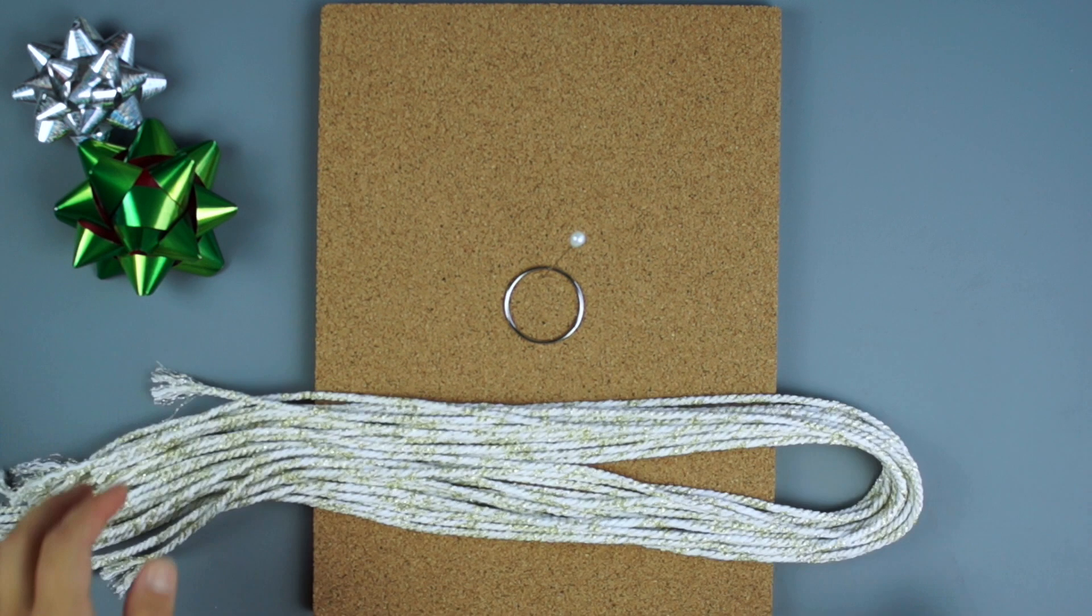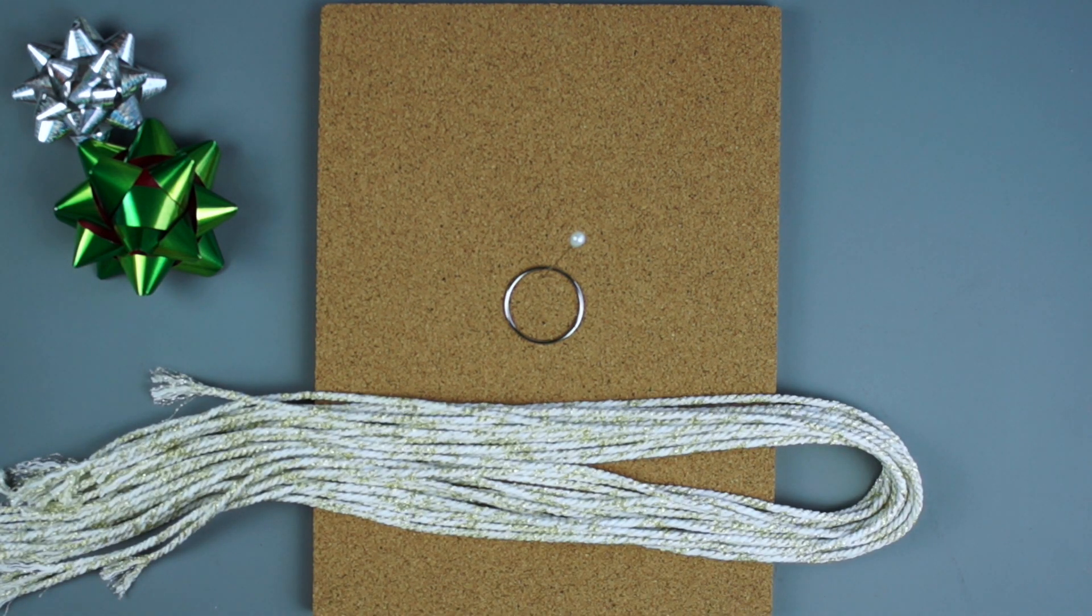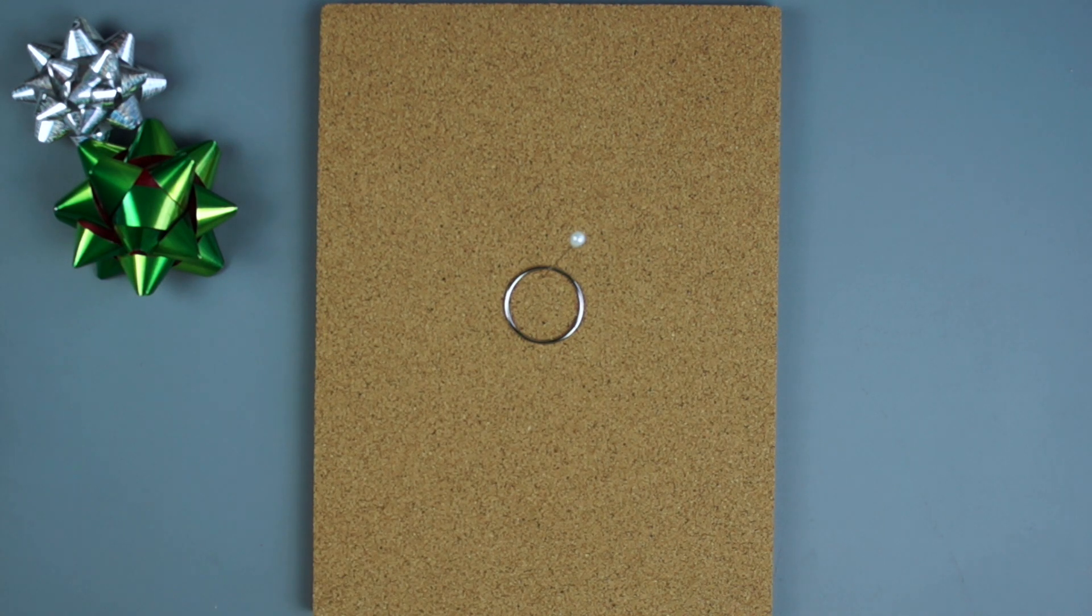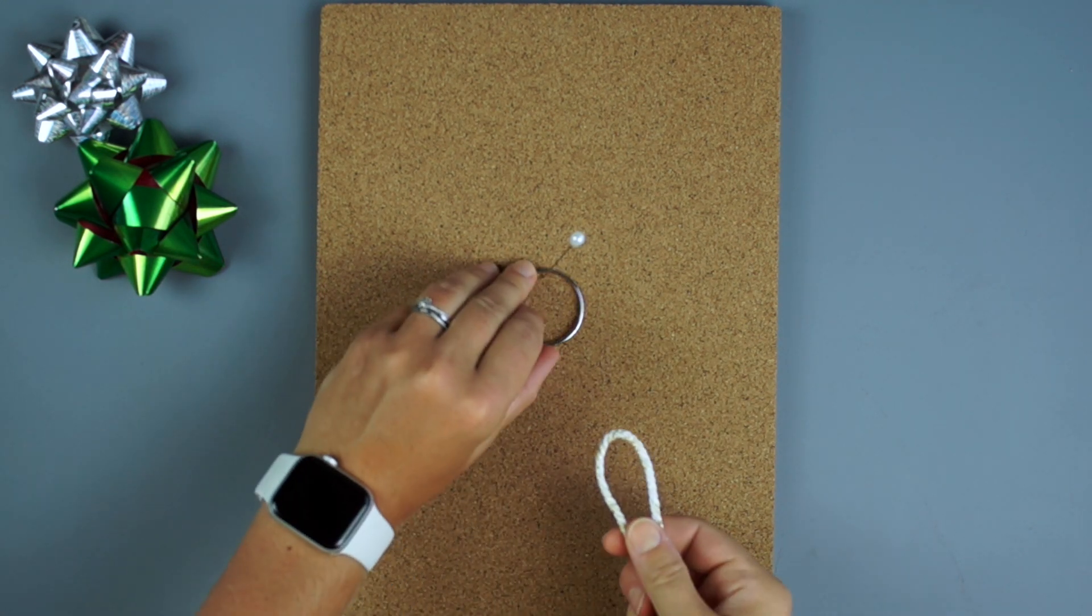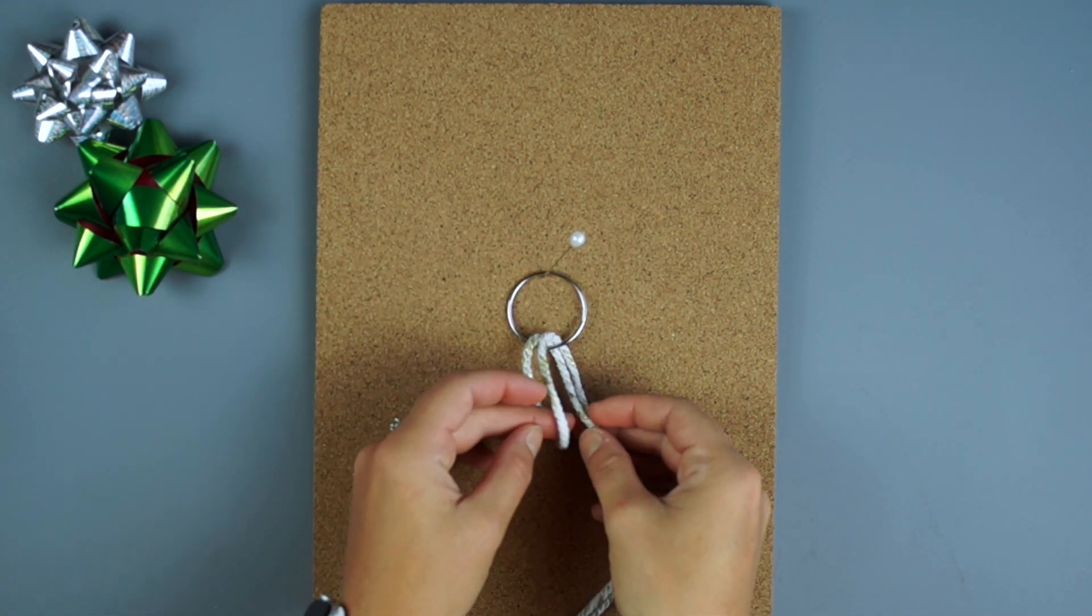Cut 15 pieces of rope, each piece is 2 feet long. Attach each piece of rope to your ring using cow hitch knots, which is the reverse of a lark's head knot.